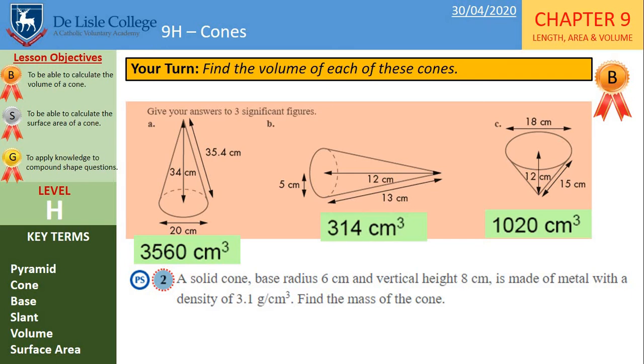Question 2. We're asked to find the mass of the cone. So the first thing would be to find the volume and then use the formula for mass density and volume to get the mass. And therefore we have got 935 grams.